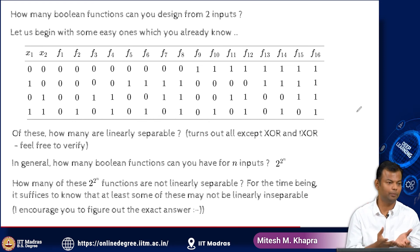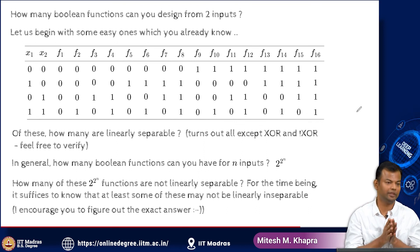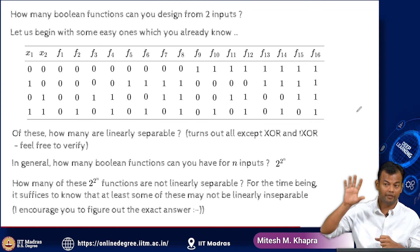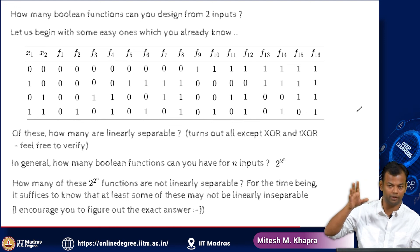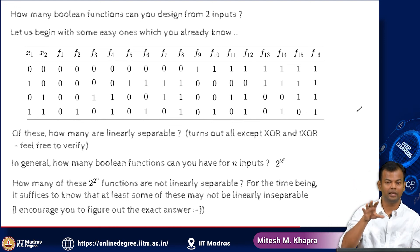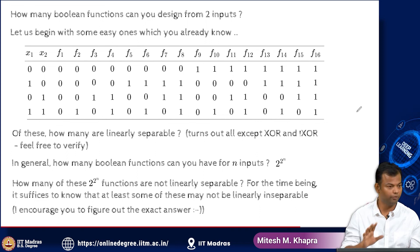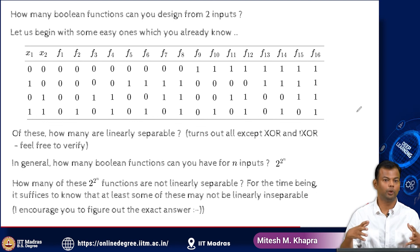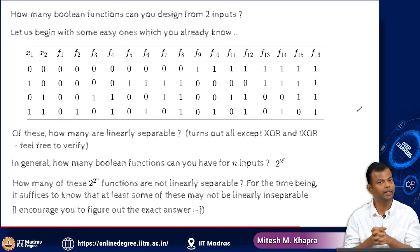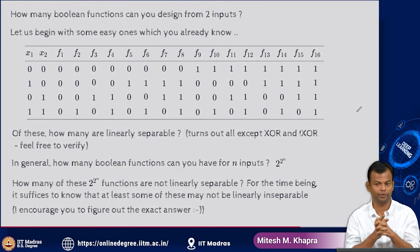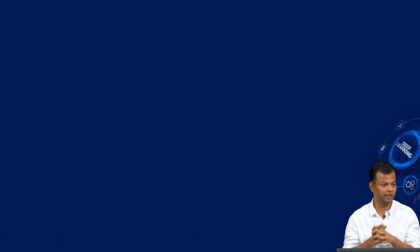If that is the case with simple Boolean functions, in the real world we have more complex cases where data will not be linearly separable. We need a way of dealing with non-linearly separable functions in the generic case when inputs and outputs are not Boolean at all. For now, in this lecture, we will try to see if we can find a solution for the Boolean case. I will end this module here, and in the next module we will try to come up with a network of perceptrons which can handle Boolean functions that are not linearly separable, even though a single perceptron cannot.